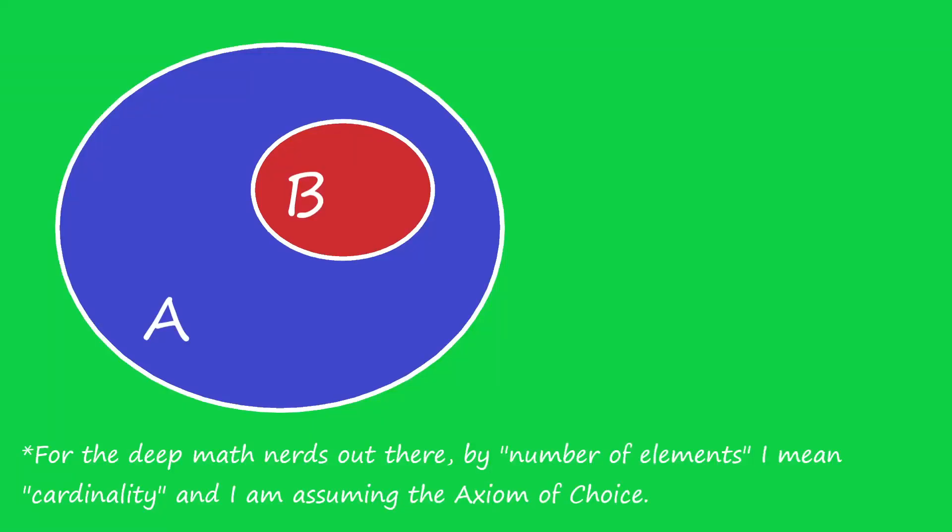A set is infinite if it has a proper subset, that is a subset that doesn't have everything in it, that has the same number of elements as the set itself. Or rather, has a one-to-one mapping that pairs up everything in both sets.